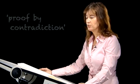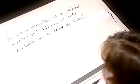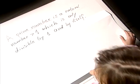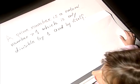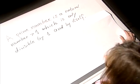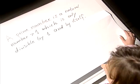Let's show that there are infinitely many prime numbers. First, let's recall what a prime number is: a prime number is a natural number greater than one which is only divisible by one and by itself.